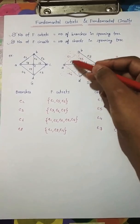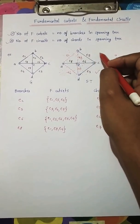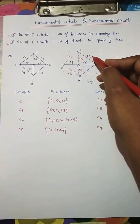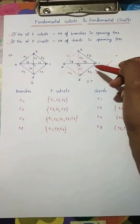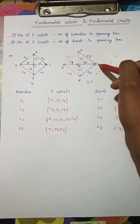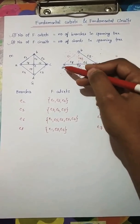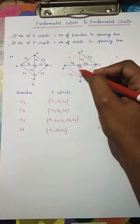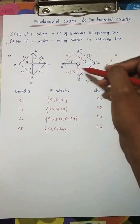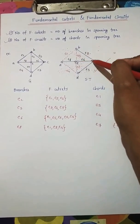For branch e2, the cut set contains e2 as the one branch and two chords e1 and e5, so the cut set is {e1, e5, e2}. For branch e3, the cut set is e3 as the branch and e4 and e7 as chords, giving the cut set {e3, e4, e7}.